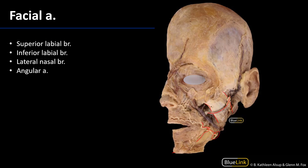The facial artery continues — you can see it's rather tortuous here — and it gives off another branch. Usually this branch is the more robust of the branches that one can see. This is the superior labial branch, which serves the upper lip. The facial artery continues on, ascending alongside the nose, where it sends another branch called the lateral nasal branch. Beyond the lateral nasal branch, the facial artery becomes the angular artery.